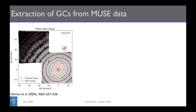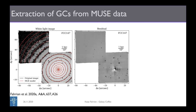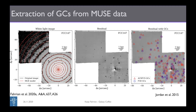The first step is to get rid of the galaxy light. Using a multi-Gaussian expansion model, we end up with a residual image where all these point sources turn up — and many of those are in fact globular clusters.